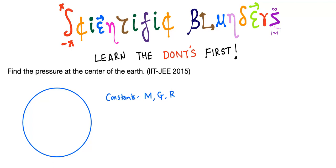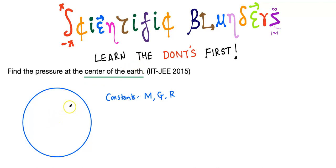Hello friends, welcome back to Scientific Blunders where you learn the don'ts first. We are going to be continuing our series on gravitation today, and this is the problem we have: find the pressure at the center of the Earth. This is a problem adapted from IITJEE 2015. In the exam the question was to find the pressure not only at the center but as a function of r, at different points inside the Earth. But today we are just going to consider one special case — finding the pressure just at the center.